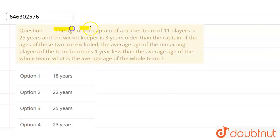The question is, the age of the captain of a cricket team of 11 players is 25 years. And the wicket keeper is 3 years older than captain.